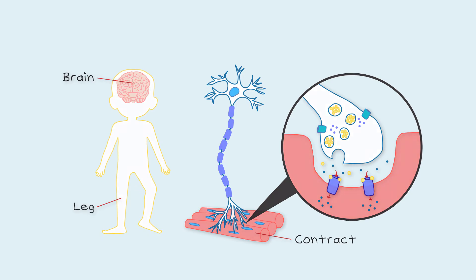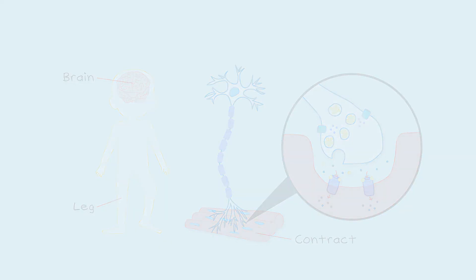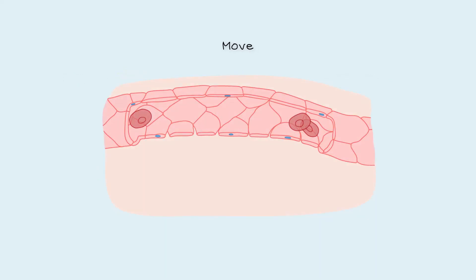Cells are constantly communicating and sending signals to each other. Some of these are to tell cells to move. Macrophages, a type of immune cell, lie waiting in our tissues so they can quickly find infections. When macrophages discover bacteria in the tissues,